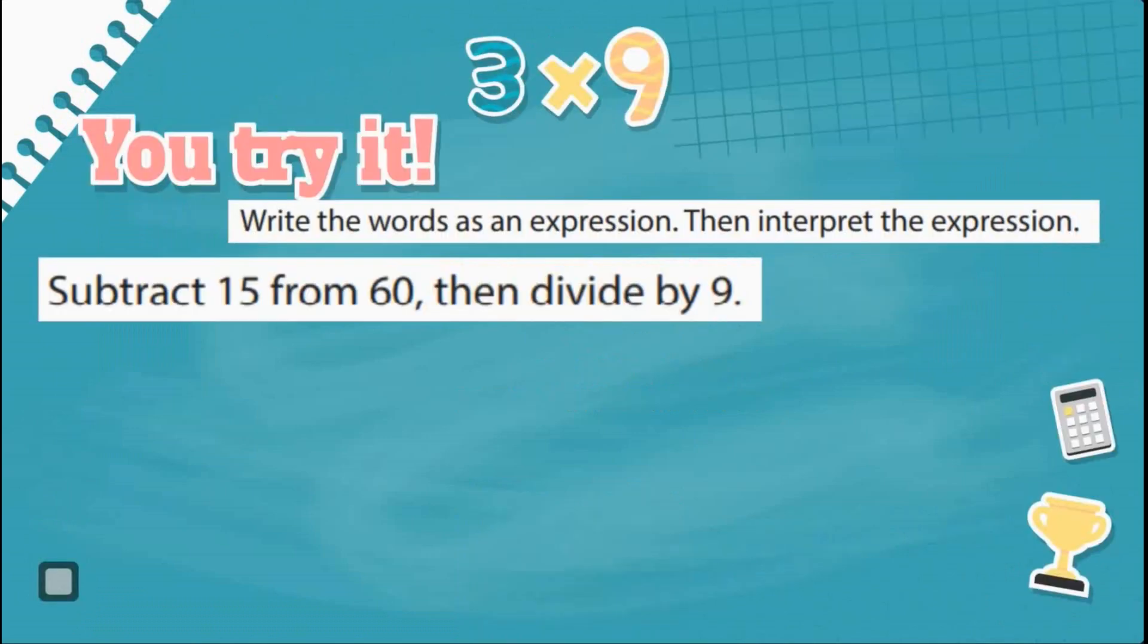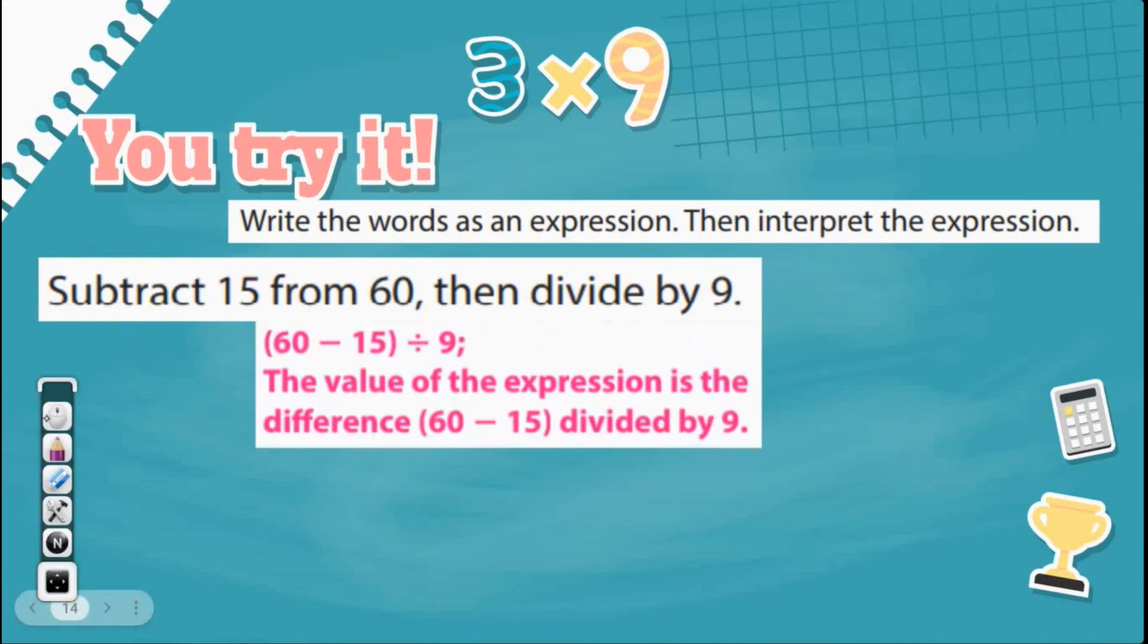Now it's your turn. Write the words as an expression and then interpret the expression. Subtract 15 from 60, then divide by 9. Let's write the expression. So it's telling us subtract 15 from 60. This is what we need to do first. So 60 minus 15. Because it says subtract 15 from 60. So I'm going to do that first. Then divide by 9. It's telling me exactly what to do. The value of the expression is the difference, 60 minus 15, divided by 9.